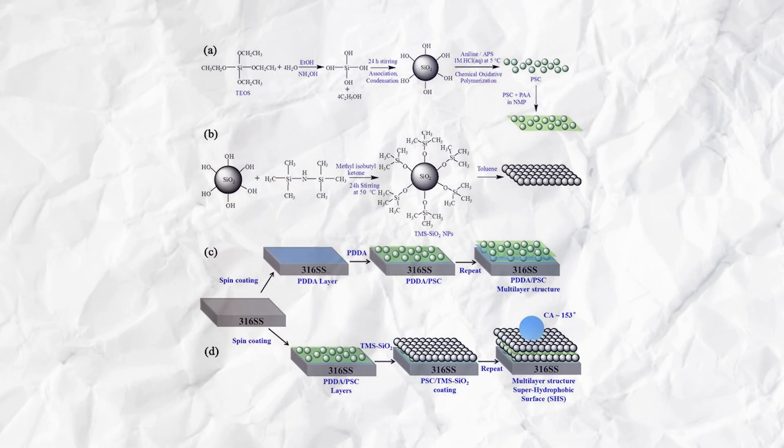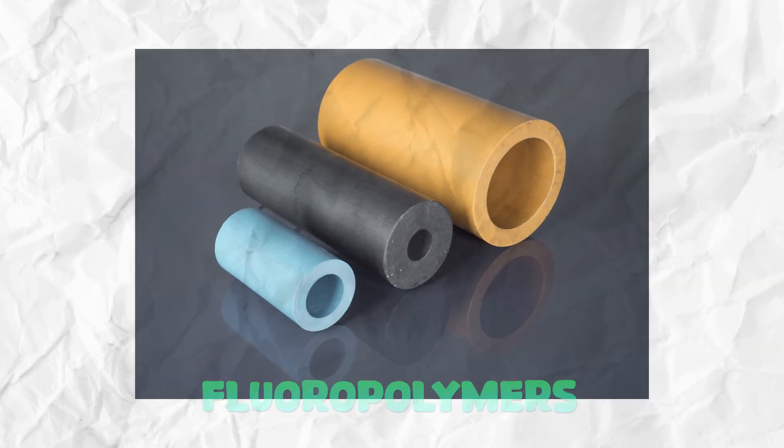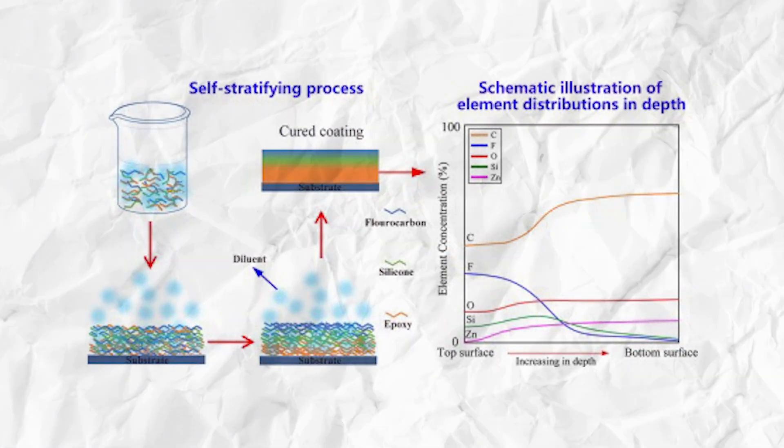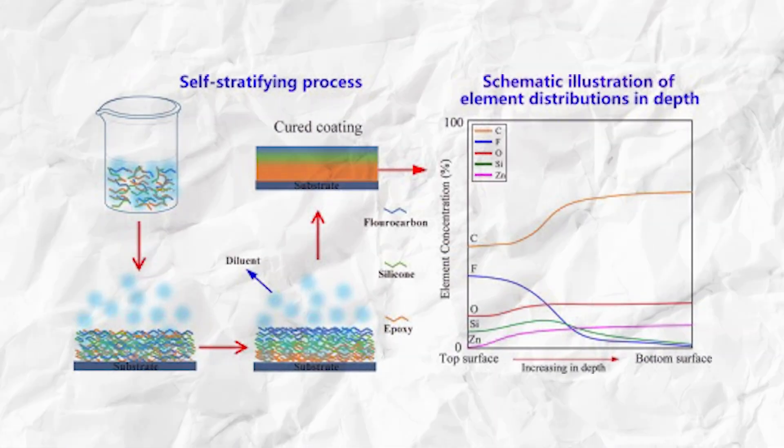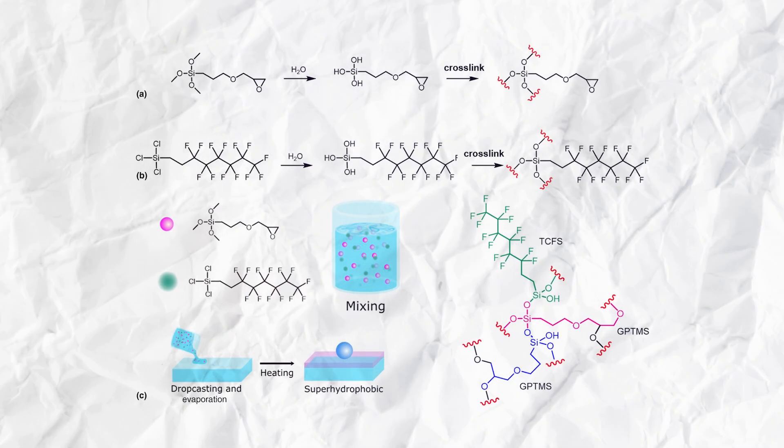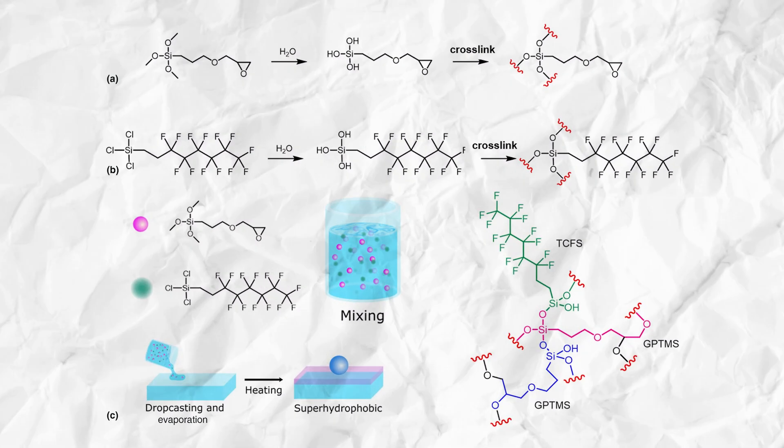Beyond physical structure, the chemical composition of hydrophobic coatings is equally vital. Materials with inherent water-repelling properties are often employed. Notably, fluoropolymers, rich in fluorine, are widely used due to their low surface energy and nonstick characteristics. The presence of fluorine atoms enhances the hydrophobic nature of the coating, contributing to its efficacy in repelling water.